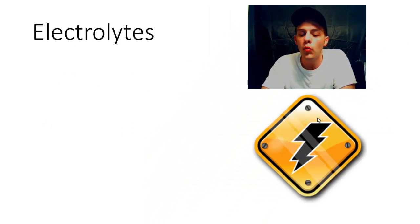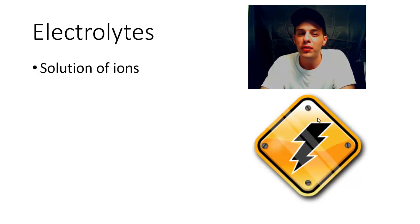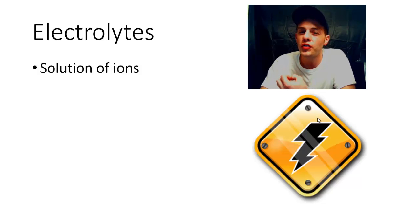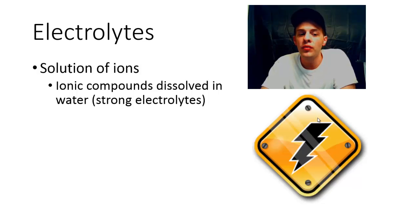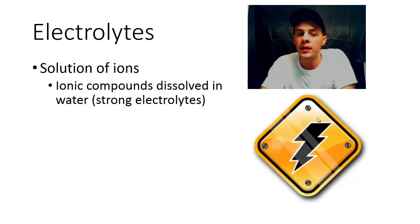A little bit more about electrolytes: we now know that electrolytes are nothing more than an aqueous solution with ions floating around, and those ions act as charge carriers allowing electric current to pass through. Ionic compounds dissolved in water are an example of what we call a strong electrolyte.